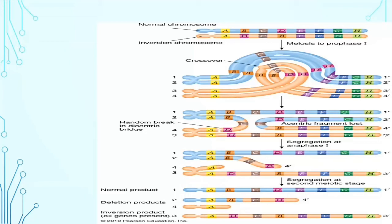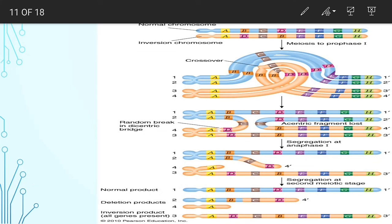During meiosis, the paired inverted chromosome forms a loop so loci pair with their homologs on the un-inverted chromosome. Chromatids one and three do not take part in crossover; only the second and fourth chromatids participate. When crossover occurs between the B and C region, the sequence ABCD from the second chromatid crosses with the CD region of the fourth, resulting in a fragment with two centromeres — a dicentric bridge.